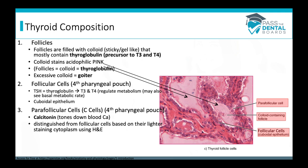For histology, the three main components to track are follicles, follicular cells, and parafollicular cells (also called C cells). A follicle is like a grain silo storing thyroglobulin, the precursor to T3 and T4. Follicles are filled with colloid — a sticky gel-like substance made up of thyroglobulin. Colloid stains acidophilic and appears light pink. Excessive colloid in the thyroid is what causes a goiter.